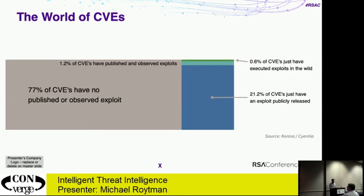When we slice all of the vulnerabilities in that data set — 121,000 CVEs in the National Vulnerability Database — and overlay the threat intelligence data of what has an exploit and what's being hit, we learn that 77% of CVEs have never had an exploit written for them and have never had a successful observed exploitation. That means those vulnerabilities, if you're remediating them, do not pose a risk to your environment. The only way to exploit them is a zero-day. Perhaps they're not even detected on your systems whatsoever.